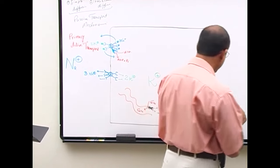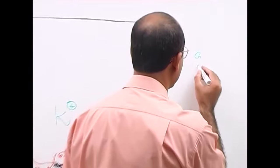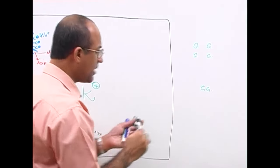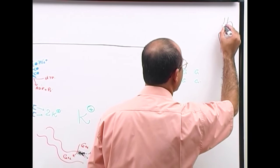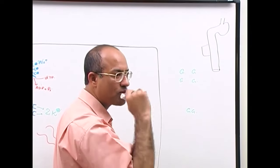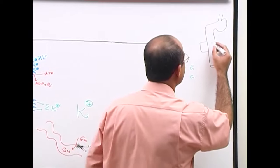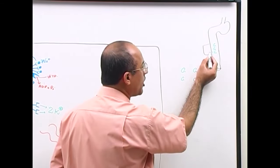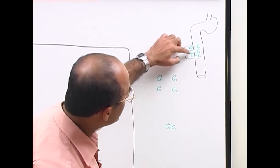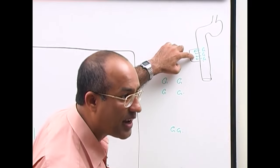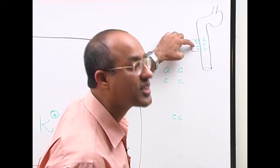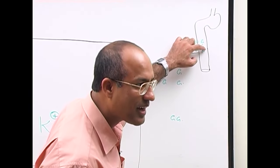For example, consider the gastrointestinal system. There is a lot of glucose in the lumen and we need to move these glucose molecules into the cell. As the cell keeps taking up glucose, the glucose concentration inside may become high, yet it must keep taking it in—eventually transporting glucose against the concentration gradient. So glucose eventually needs to be pumped uphill.